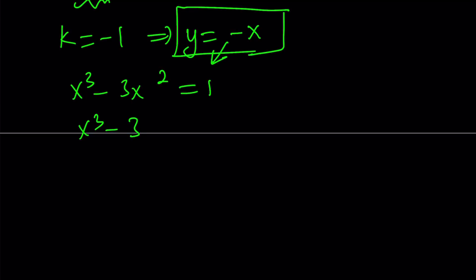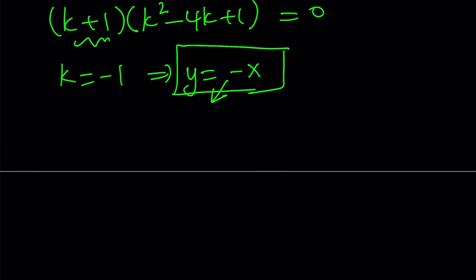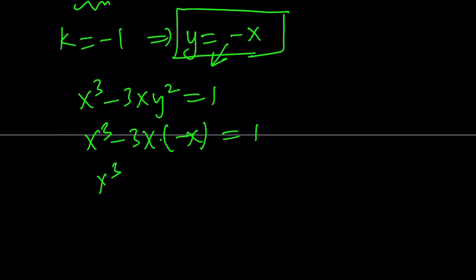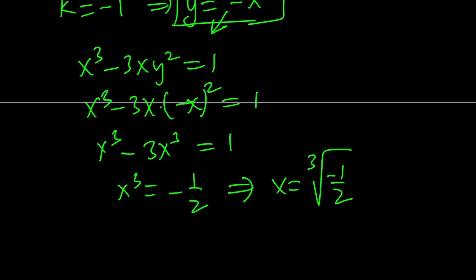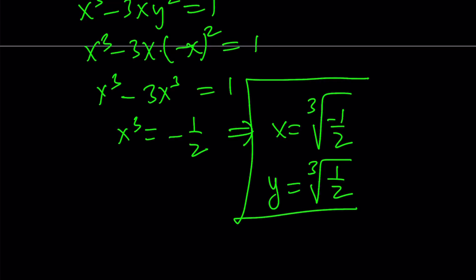Substituting y equals negative x into x cubed minus 3x times (negative x) squared equals 1, we get x cubed minus 3x cubed equals 1, so negative 2x cubed equals 1, giving x cubed equals negative one half. Taking the cube root of both sides, x equals the cube root of negative one half. And since y is the opposite of x, y equals the cube root of one half. This pair gives us one of the solutions.